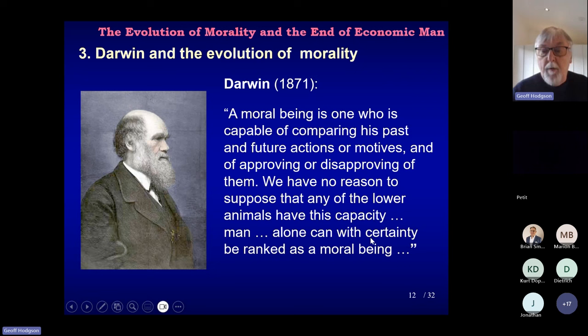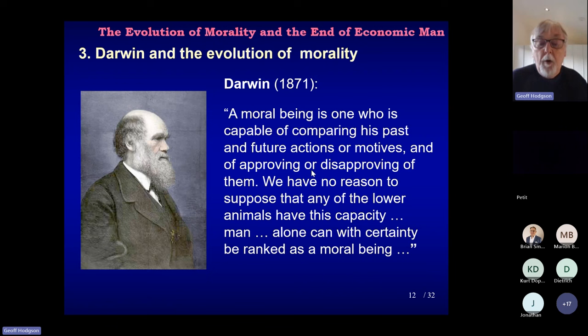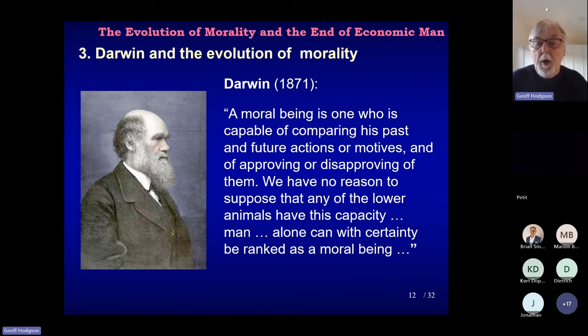For Darwin, a moral being is one who is capable of comparing his past and future actions or motives — this is the rational, reasoning part of the story — and of approving or disapproving of them. We have no reason to suppose that any of the lower animals have this capacity. Man alone can certainly be ranked as a moral being. Darwin was cautious about this — he has to explain how morality evolved, so there must be shades of grey between not being a moral being and being a moral being. He discusses those shades of grey about deliberation in so-called lower animals.